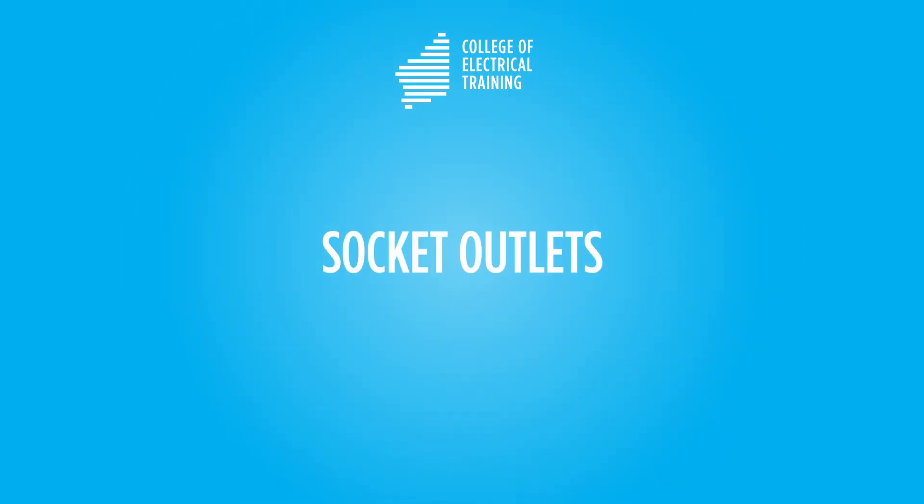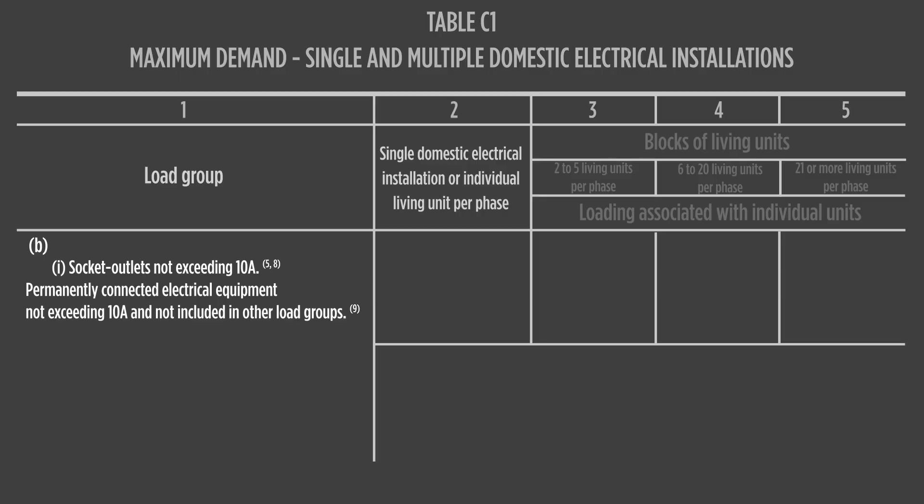However, lighting load in a domestic dwelling does not contribute significantly to maximum demand, and this option can be ignored. For socket outlets, unless installed for a specific purpose, it is hard to determine the loading on a 10-amp socket outlet, so the calculation applies a point allocation: 10 amps for 1 to 20 points, with 5 amps for every additional 20 points. 15 and 20 amp socket outlets are allocated current values for calculating maximum demand, as these are installed for specific reasons.